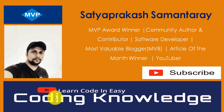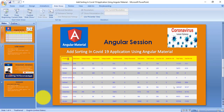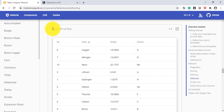There are two Angular directives: matSortHeader and matSort. These two Angular directives are used to add sorting capability to a table header. First we visit the Angular Material docs for a sample view of a sorting implementation in an Angular table — here is a table with sorting where you can click to sort in ascending and descending order.